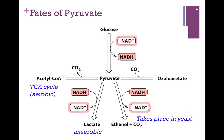What happens to the pyruvate that we make through glycolysis? In one case, we can take pyruvate and convert it to oxaloacetate, as illustrated on the far right. We can use that, as we'll see, to actually make glucose, or it could be an intermediate to make different amino acids, and we'll see that when we get to Chapter 18.